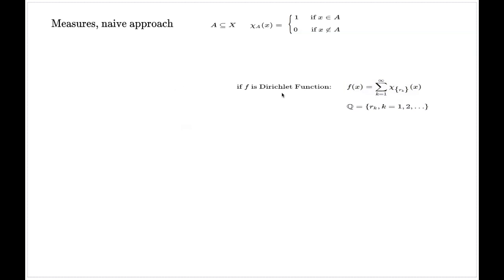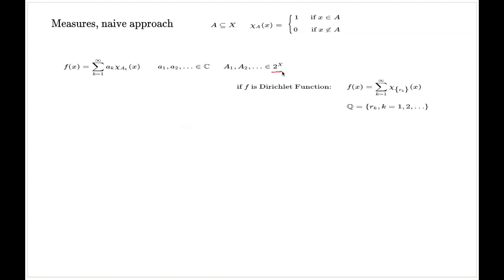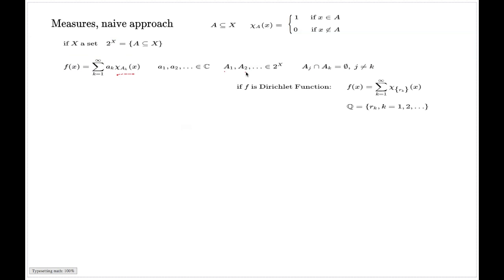They decided to focus on the simpler task of considering functions which are maybe infinite sums of indicator functions. For simplicity, the coefficients a_k here are in general complex numbers, and A_1, A_2 are some subsets of set X. The notation 2^X represents the set of all subsets of X. Here we assume these sets are pairwise disjoint — any two of them do not intersect.